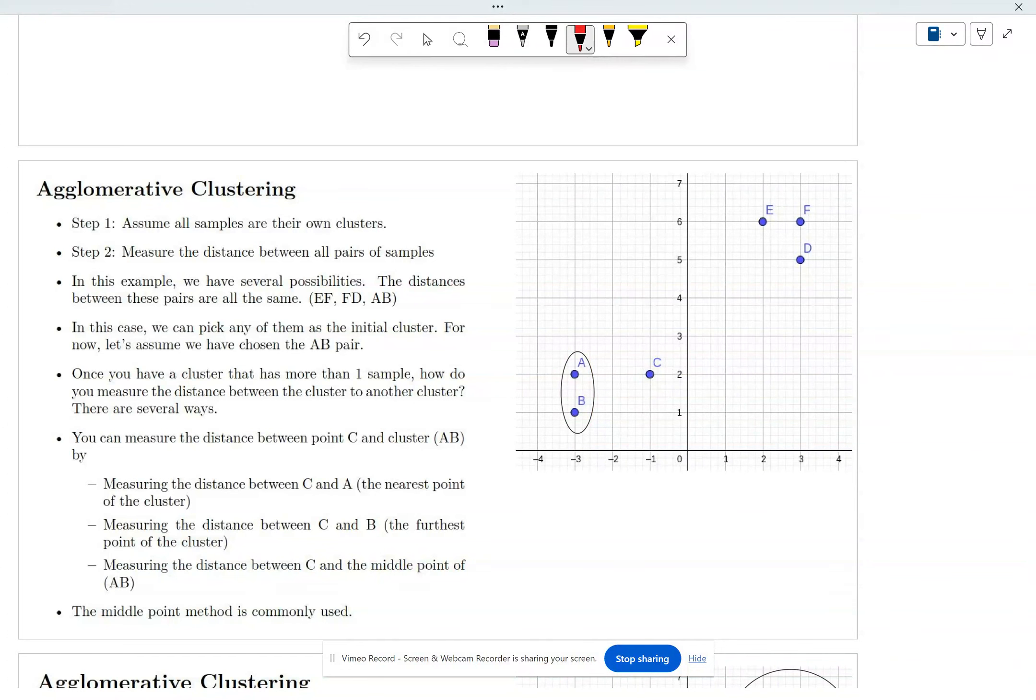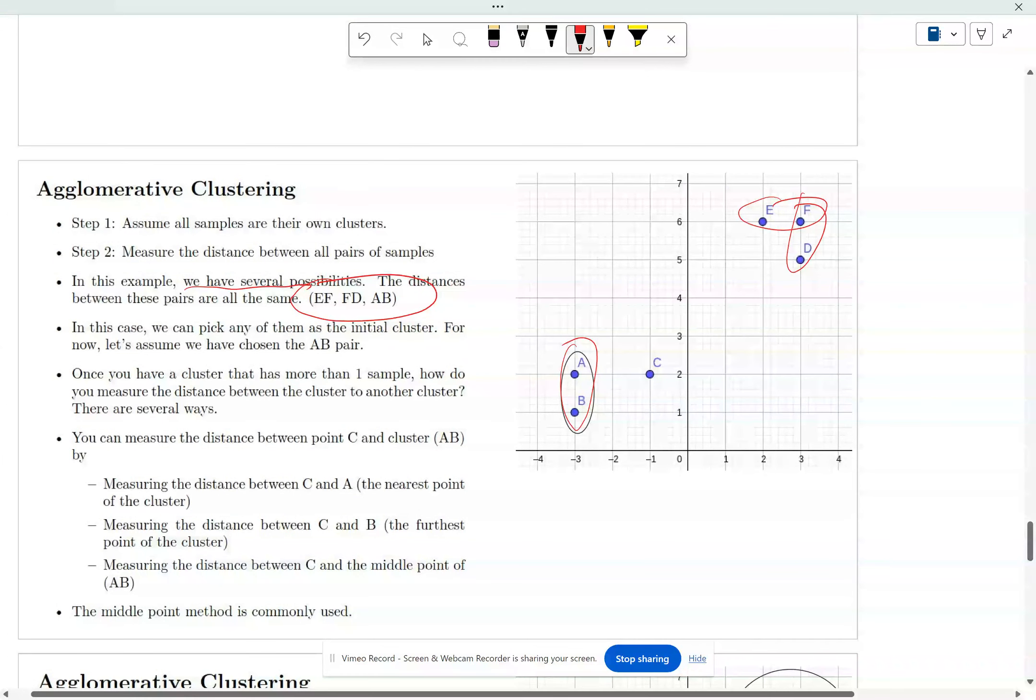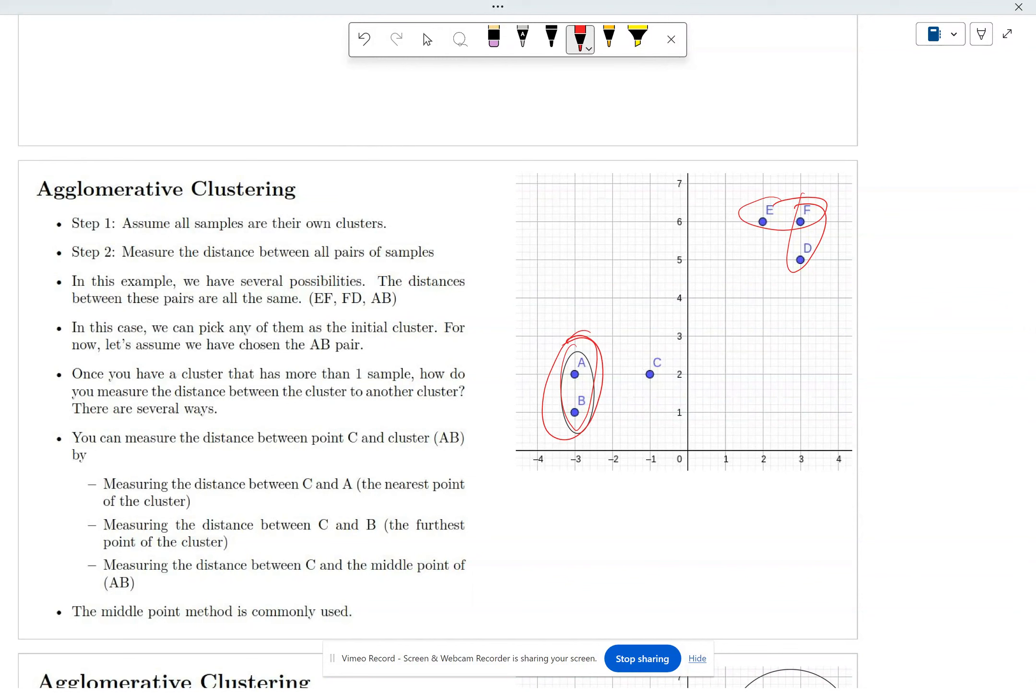Measure the distance between all pairs. In this example we have several possibilities: EF, FD, EF, FD, and AB. In those cases we can just pick AB, or you could have picked any one of them. It would have been fine.